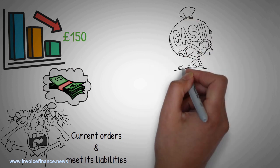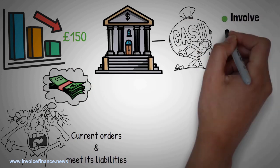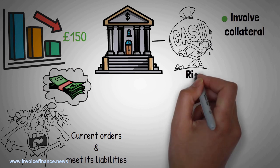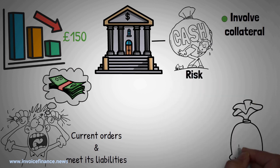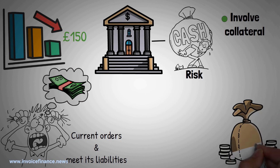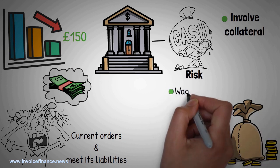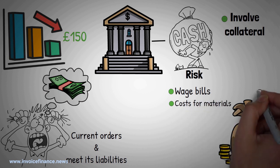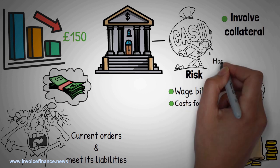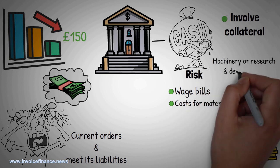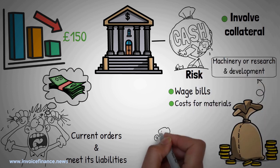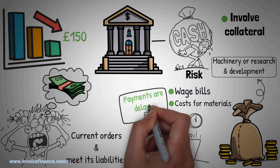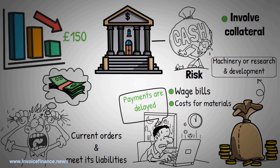This might be preferable to a bridging loan from a bank that might involve collateral, thus placing the company's assets at risk if the loan is defaulted on. Having to wait for payment for goods and services ties up money that could be spent on recurring expenses such as wage bills and costs for materials. It could be invested in machinery or research and development (R&D). It can be hard to keep on filling orders when payments are delayed, stretching cash flow.